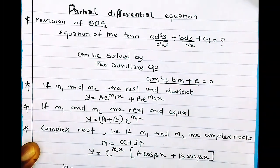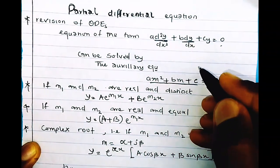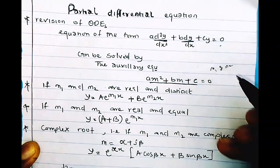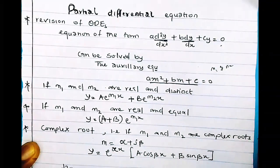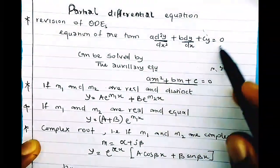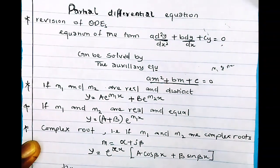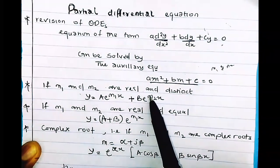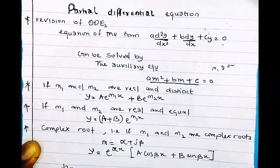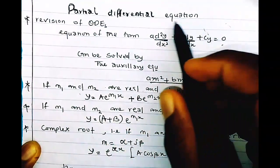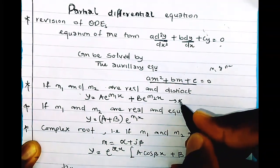The nature of the roots determines the type of solution you get when you solve this quadratic equation. You get two values: m1 and m2. If m1 and m2 are real and distinct — meaning two different roots like 2 and 3 — then the solution of this ordinary differential equation is given as shown.